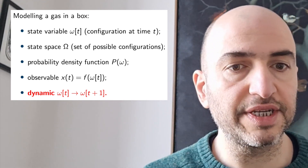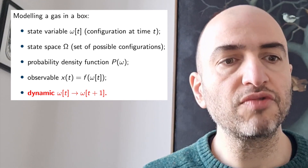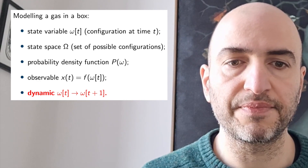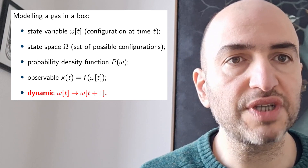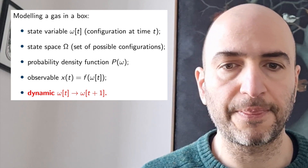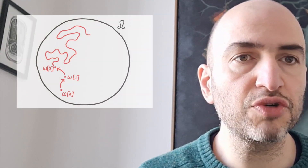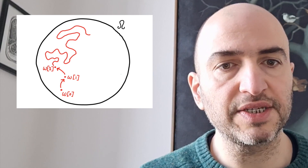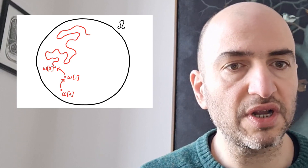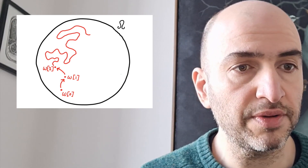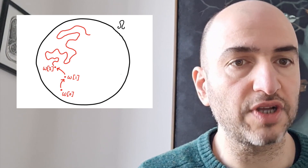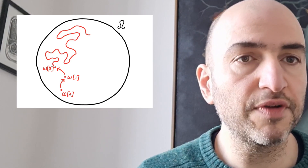The important new ingredient here is the dynamic. This is a rule for mapping from the state at one time to the state at the next time. So we've introduced time to the problem, and we have a way of following the temporal evolution of the state of the gas. Here's a visual representation of this. The state space is enclosed by the big black circle, and we have a trajectory where we start at state omega zero, apply the dynamic to reach omega at time one, apply the dynamic again to reach omega at time two, and we move through the state space.